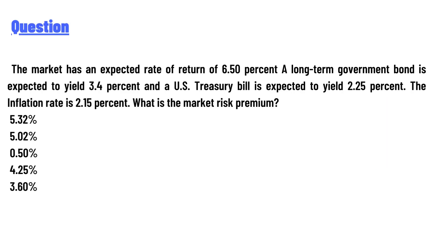The long-term government bond is expected to yield 3.4%, and the US Treasury bill is expected to yield 2.25%. The inflation rate is 2.15%. What is the market risk premium? Options: 5.32%, 5.02%, 0.50%, 4.25%, 3.60%.